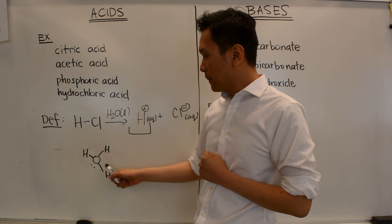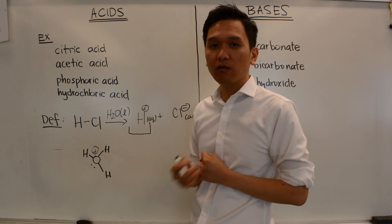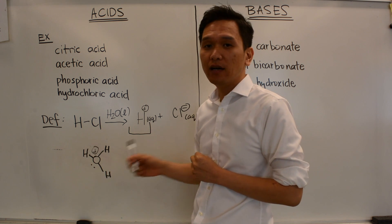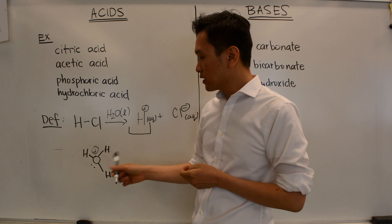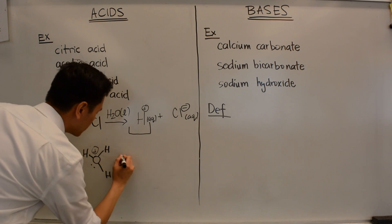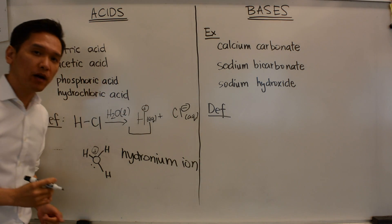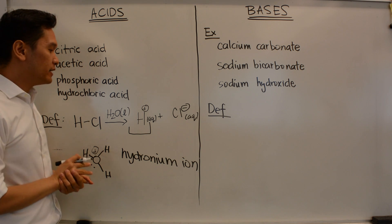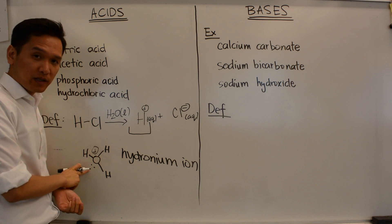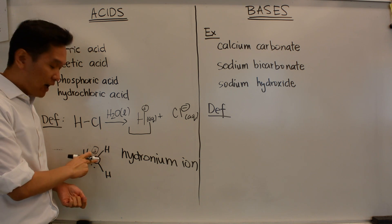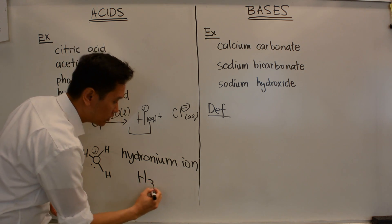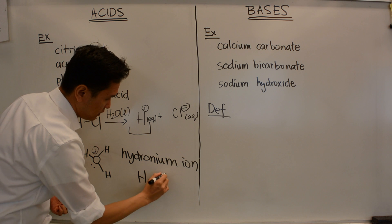When electrons are shared, we represent that as a bond. Hydrogen protons in nature actually exist in a complex where they bond to a water molecule. This species is positively charged, and oxygen is now bonded to three hydrogen atoms with one lone pair. This is called the hydronium ion. Chemists may write the proton as H+ or, more correctly, as H3O+ — the hydronium ion.